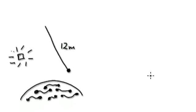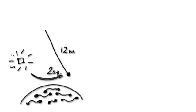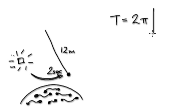See if you can work this out. You're on a mysterious planet. The length of the string is 12 meters. The time that it takes to do one swing there and back is 2 seconds. What is the gravitational pull of this mysterious planet? Always start with this formula: T equals 2 pi root L over G. Work out G, the gravitational pull of this mysterious planet.